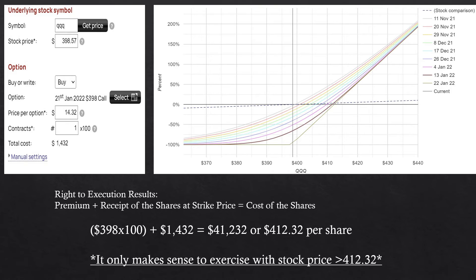We showed this chart before when we went into our first call option with our first trade. You can see this exponential curve that ends on a finite timeline, where the price of the underlying asset is the dashed line and its percentage return is relatively small along that line. Here we have the Nasdaq QQQ ETF — its current stock price is $398.57. An in-the-money call at $398 to be executed no later than January 21st has a price per option of $1,432, meaning you pay that much per option contract for each share.